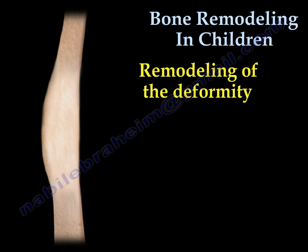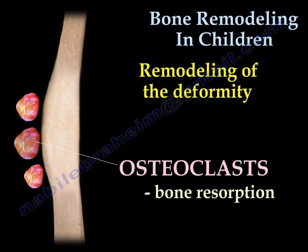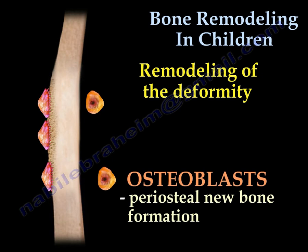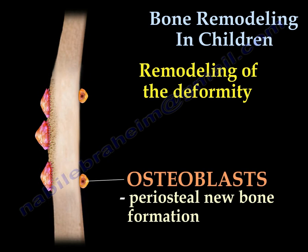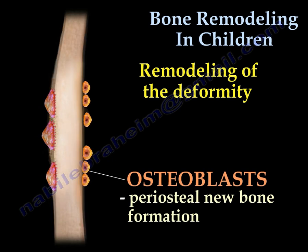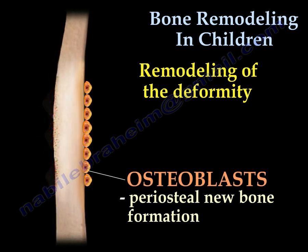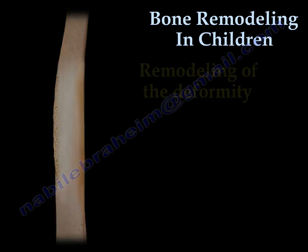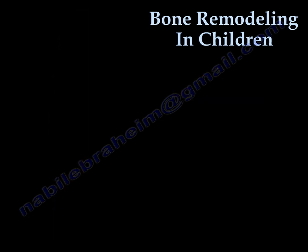How is the deformity remodeled? Remodeling means correction. The osteoclast will resorb the bone from one side by reabsorbing that bone. The osteoblast will lay new bone formation. The periosteum will help in this manner, and the bone will gradually straighten its shape.